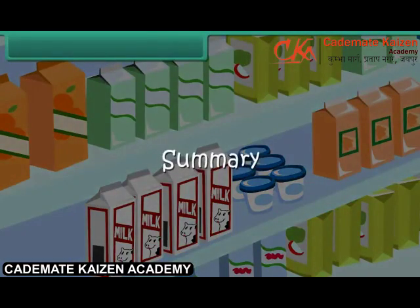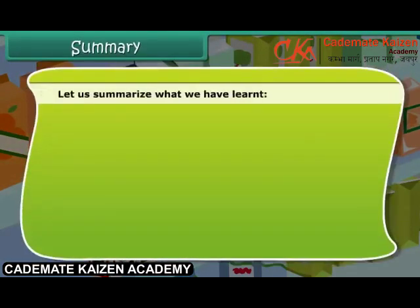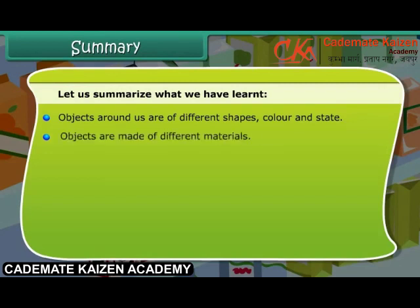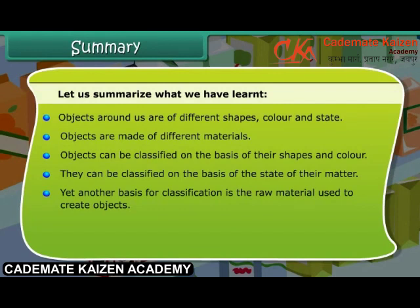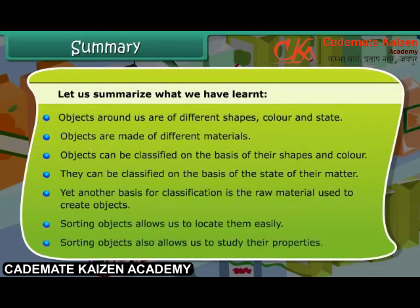Let us summarize what we have learned. Objects around us are of different shapes, colors, and states. Objects are made of different materials and can be classified on the basis of their shapes, color, and state of matter. Another basis for classification is the raw material used to create objects. Sorting objects allows us to locate them easily and also allows us to study their properties.